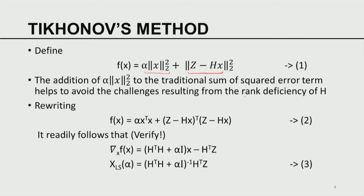In the over-determined problem, F(x) was essentially the residual term alone. Now we add the alpha penalty term. By rewriting F(x) and computing the gradient and equating it to zero, we get the least squares solution as a function of alpha: x_LS equals (H transpose H plus alpha I) inverse H transpose Z. When alpha equals zero, this reduces to the standard over-determined solution, so this is a generalization of that concept.